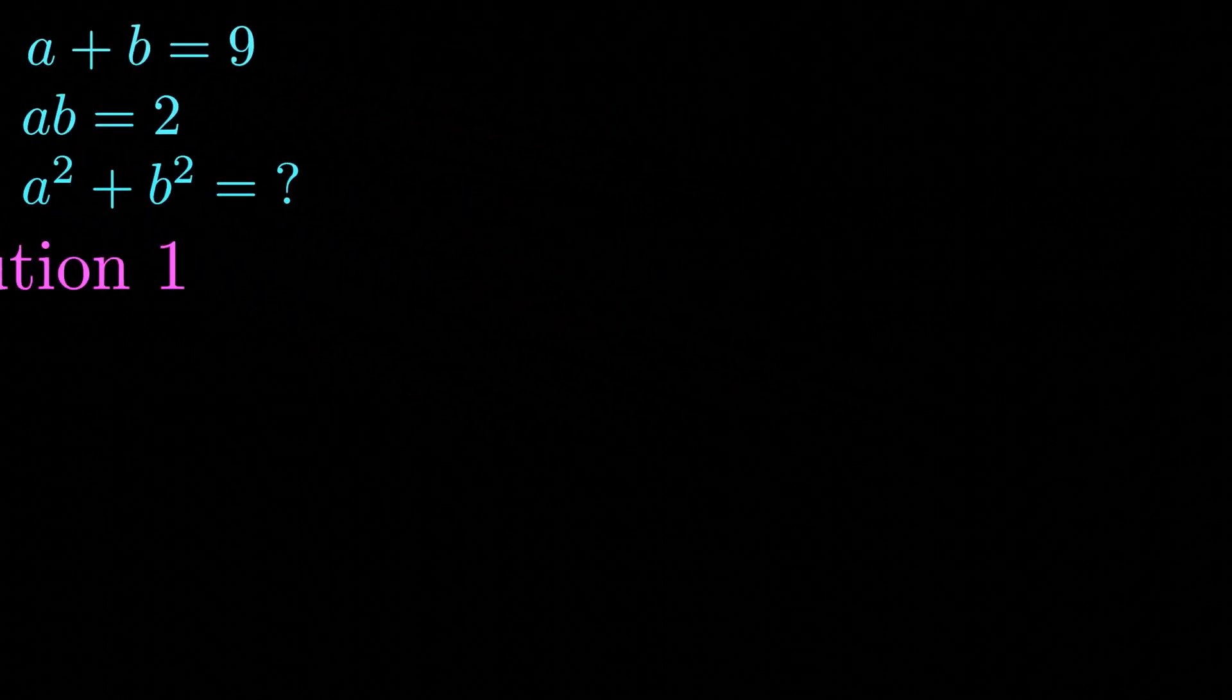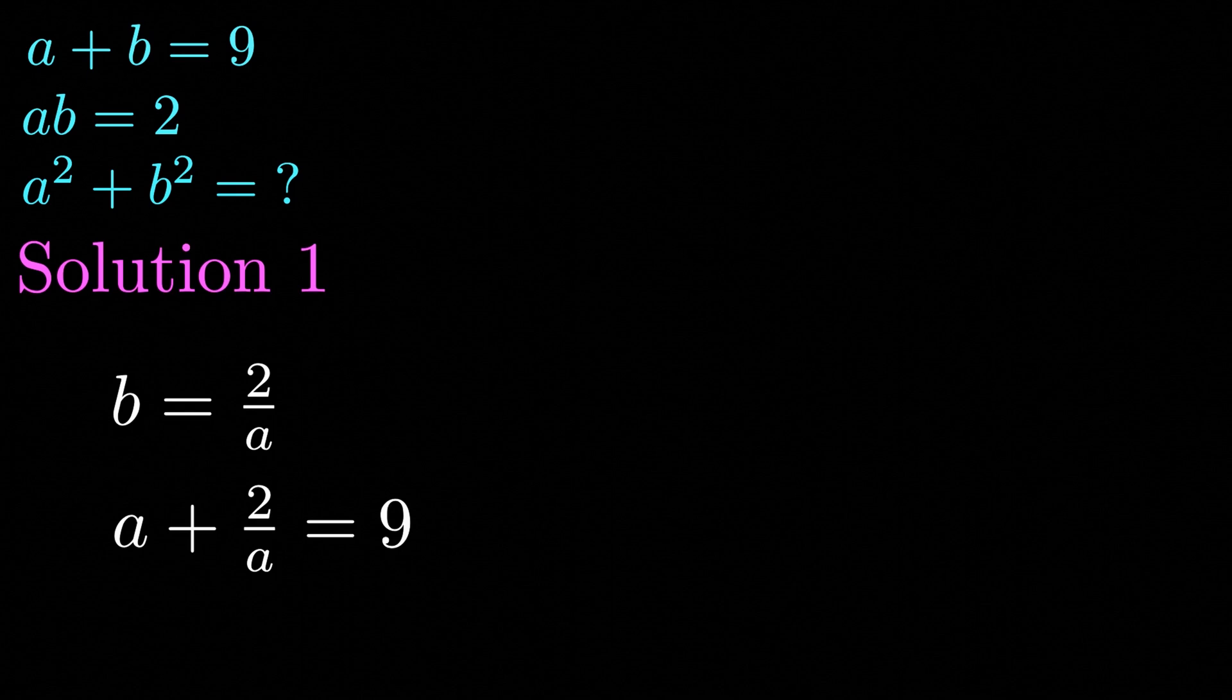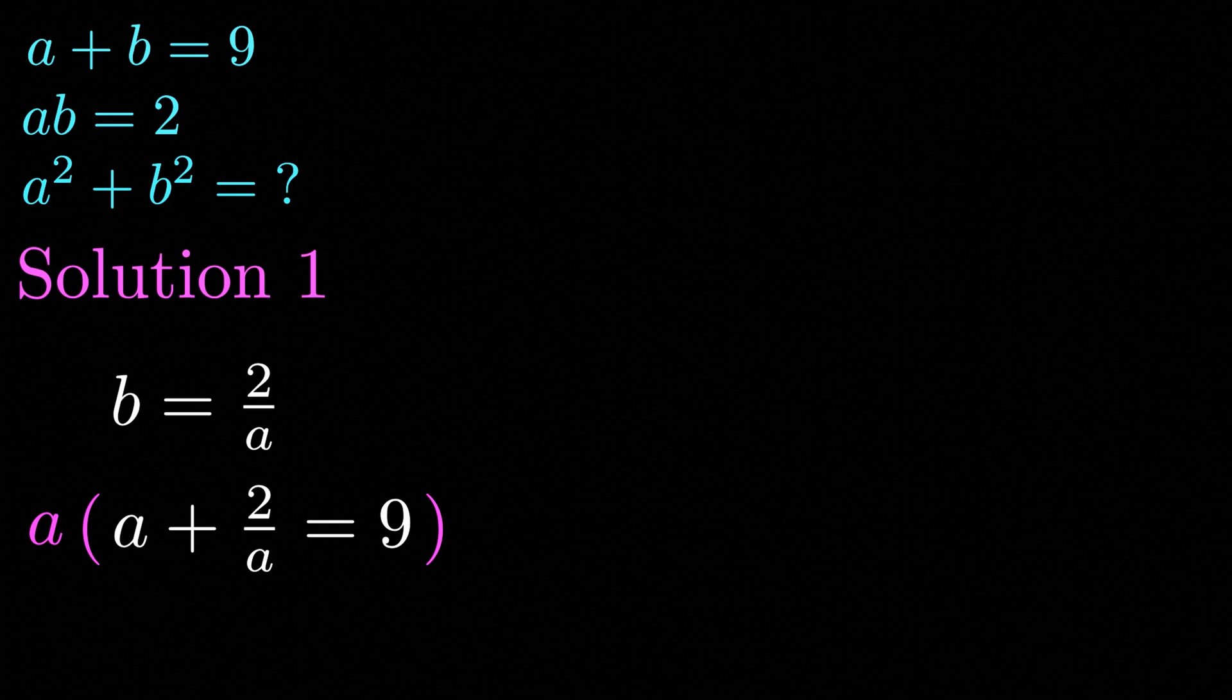So for solution one let's set b to be equal to 2 divided by a. If we substitute this value for b into our first equation we get a plus 2 divided by a is equal to 9. Now we're going to multiply both sides of this equation by a and subtract 9a from both sides after multiplying everything by a.